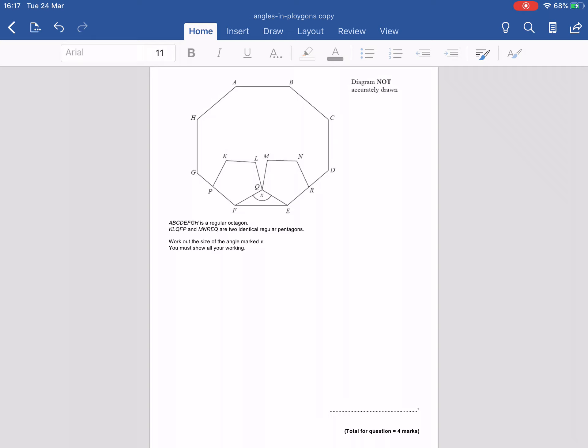So the first one I'm going to do is question number four. Here's the question. I've got a regular octagon and inside it I've got two identical regular pentagons. And I want to work out the size of the angle marked X. I must show all my working, so I don't have to explain anything I'm doing, but I need to show how I'm getting my answers.